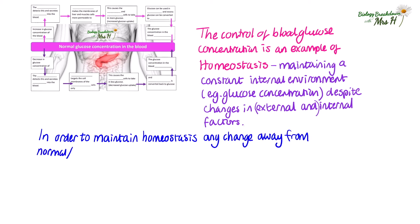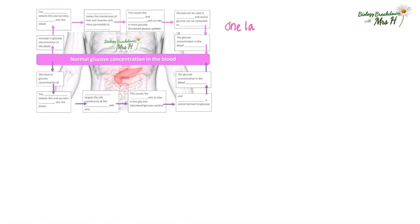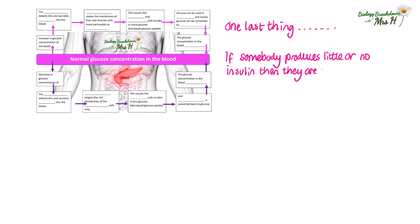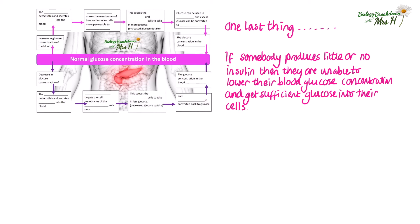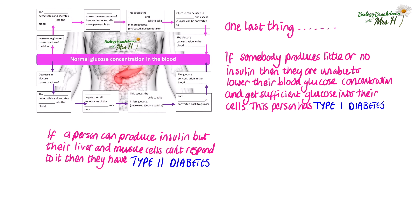In order to maintain homeostasis, any change away from normal or optimum conditions must be reversed or returned back to the optimum. Bringing conditions back towards the optimum is called negative feedback. One last thing: if somebody produces no insulin, they are unable to lower their blood glucose concentration and get sufficient glucose into their cells — this person has type 1 diabetes. If a person can produce insulin but their cells can't respond to that insulin, then this is type 2 diabetes. There are obviously more details you need to know about diabetes, but that's for a different video.